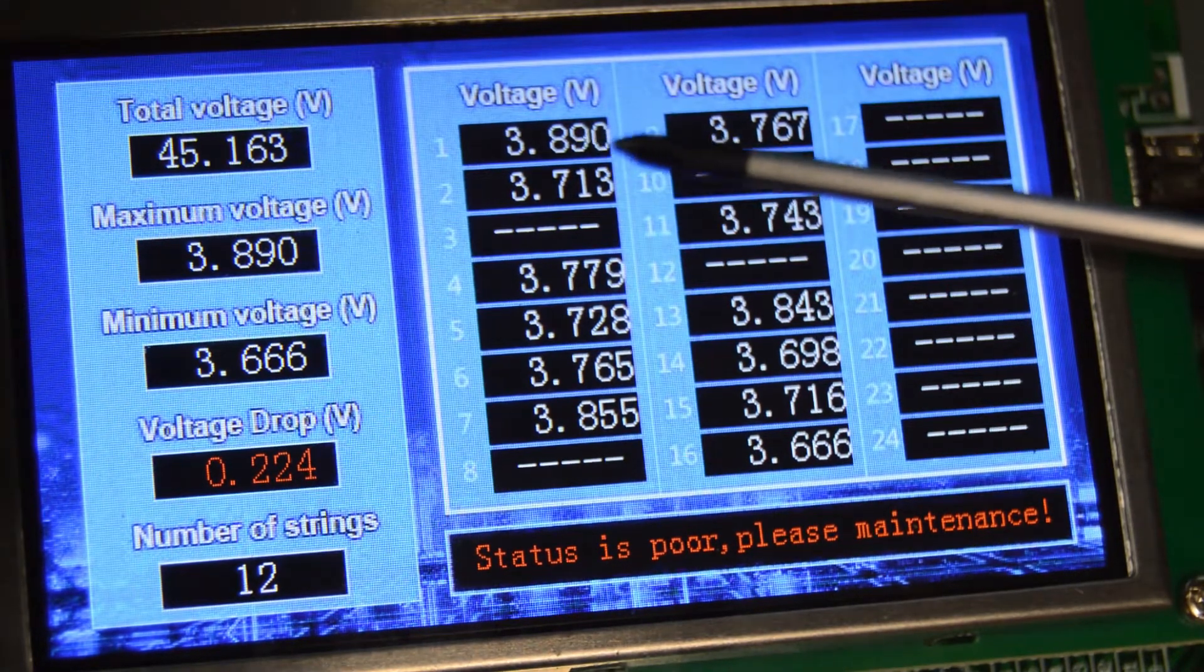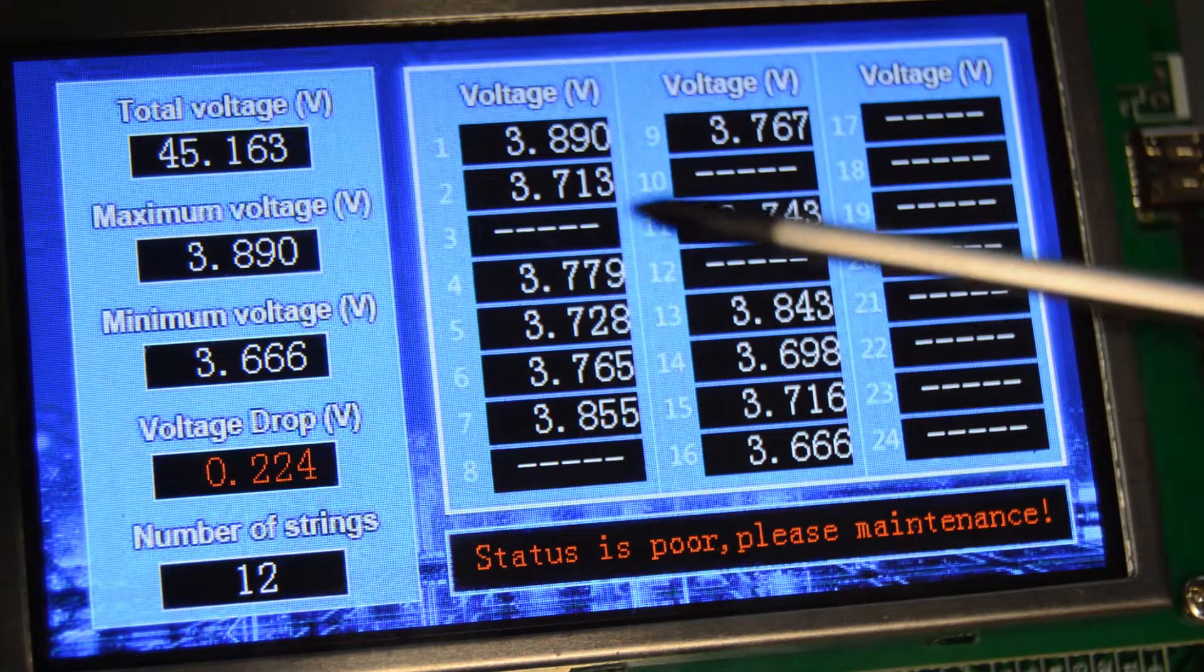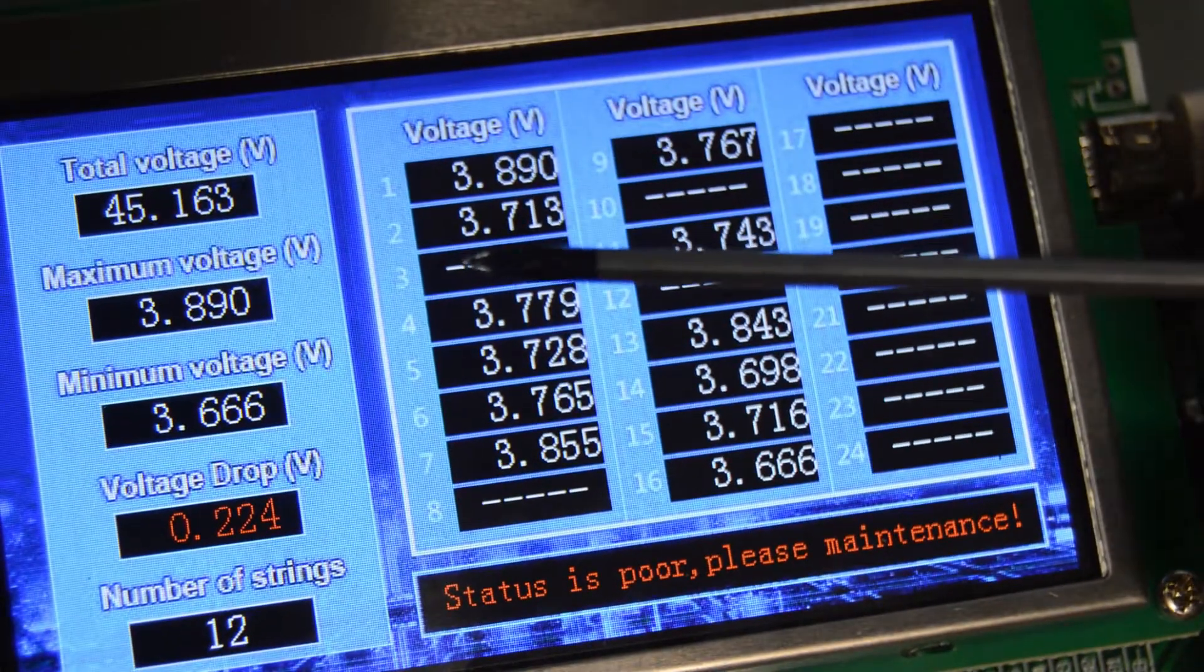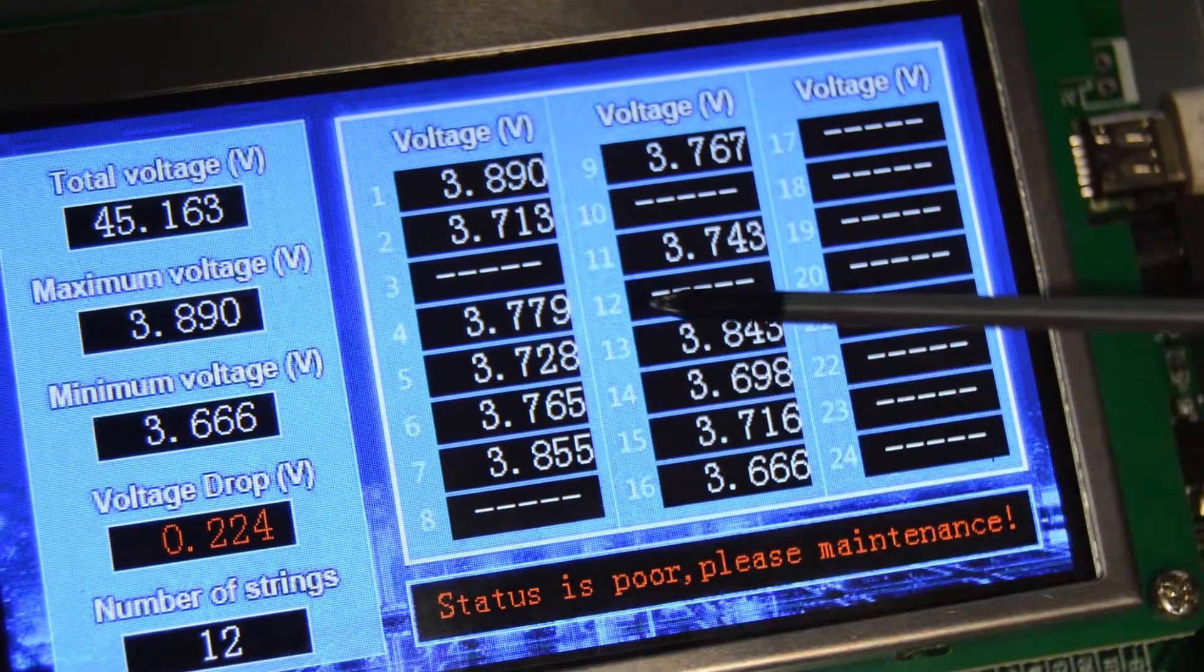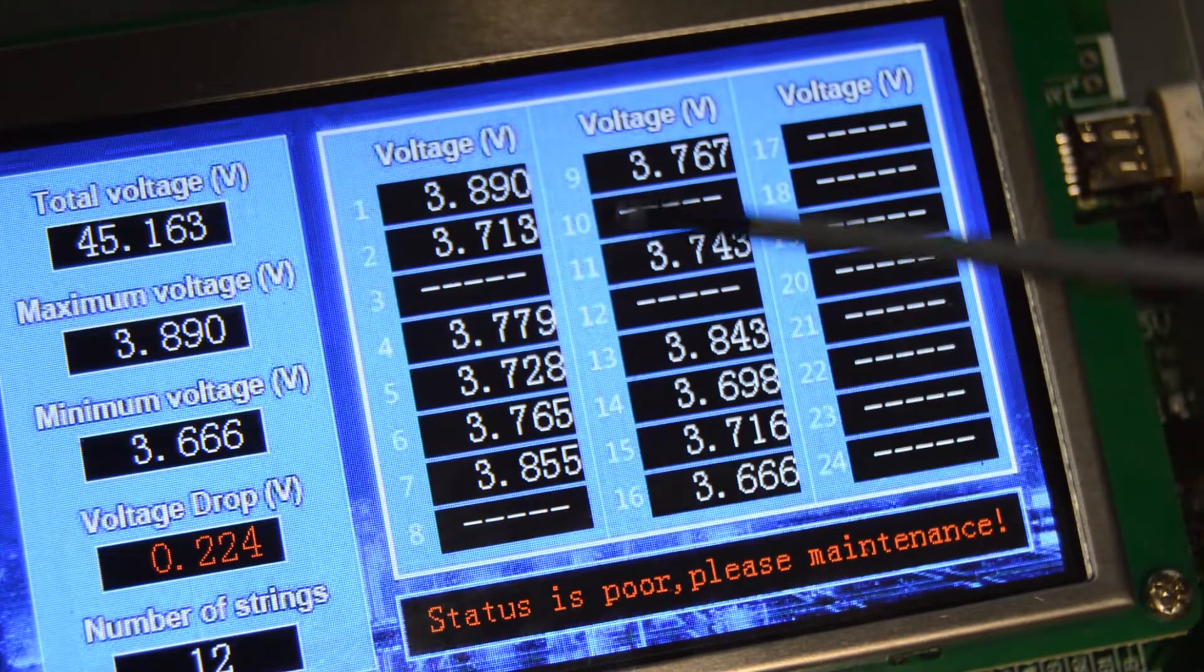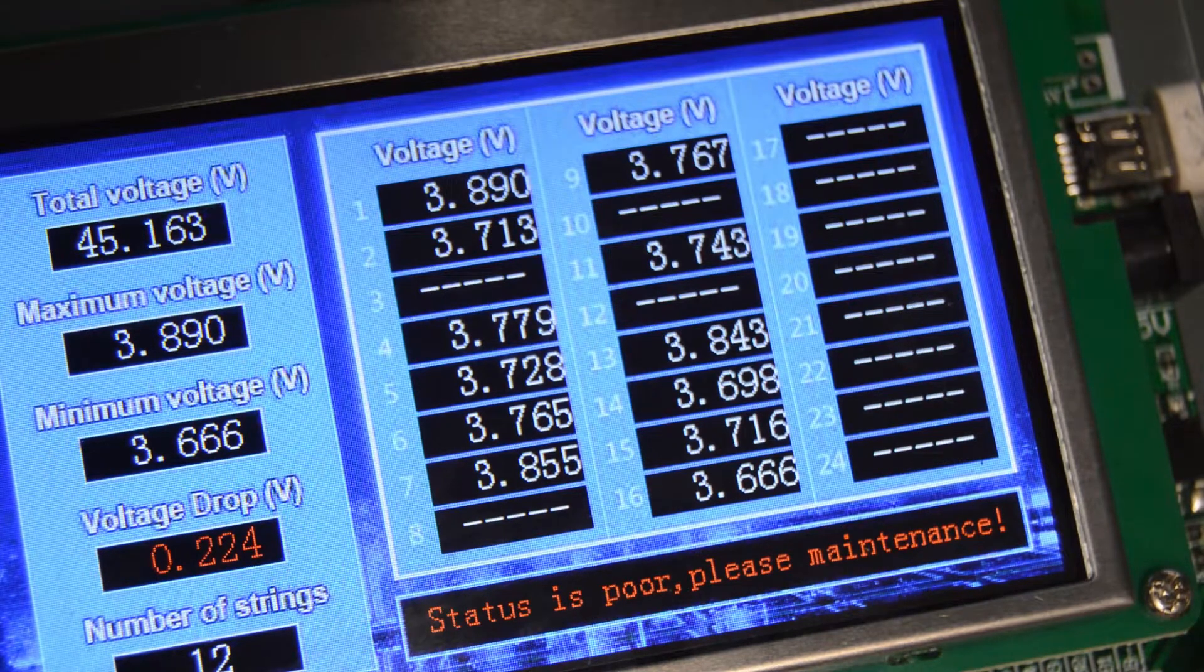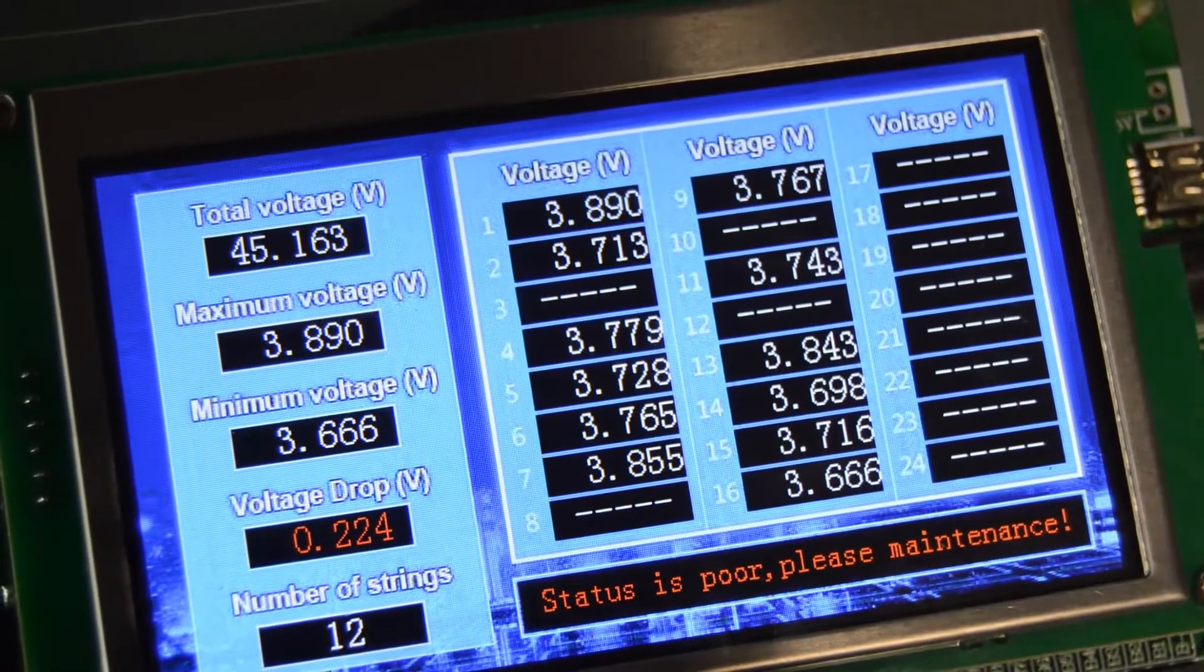But if we go over to the right-hand side now, this is a graph displaying each and every group. We've got group one at 3.890, group two at 3.713, a short. So when you've got a dead short across a cell group, which cells often do when they fail, that's basically why we're not seeing sixteen groups here, because groups 3, 8, 10, and 12 are dead short and failing. So essentially in terms of cell health or cell durability right now, these cells are well past the sell-by date.